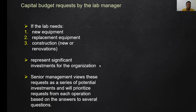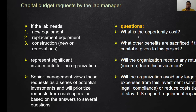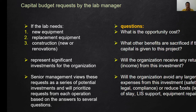Capital budget requests represent a significant investment for the organization. Senior management views these requests as a series of potential investments and will prioritize requests from each operation based on answers to several questions. Examples of questions asked before the lab manager can request a capital budget include: what is the opportunity cost? What benefits are sacrificed? Will the organization receive any return from this investment, or will the organization avoid any larger expenses? This includes hidden costs such as safety, legal compliance, or whether purchasing the asset can reduce costs such as length of stay, LIS support, or equipment repair.